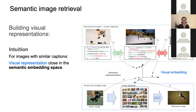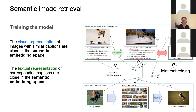We can also learn a second embedding function θ that embeds captions into the same joint space. We add constraints so that a query image is closer to the caption of the relevant image than the non-relevant one, and vice versa — the caption of the query should be more similar to the relevant image than the non-relevant image.